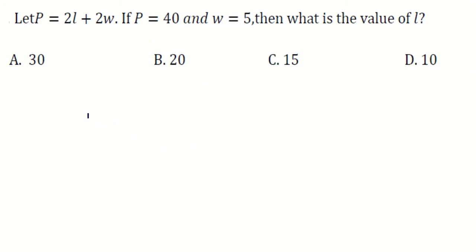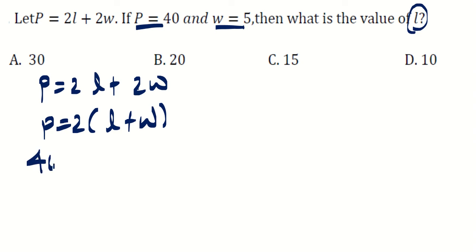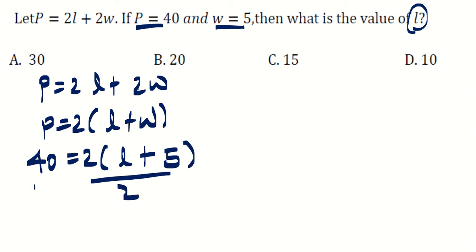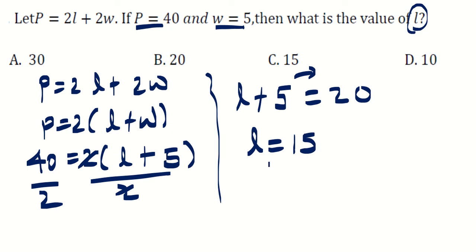The next question says P equals 2L plus 2W, the perimeter formula of a rectangle. P and W are given; we need to find L. Substituting: P equals 2 times (L plus W). Replacing P with 40 and W with 5, then dividing both sides by 2, we get L plus 5 equals 20, so L equals 20 minus 5, which is 15. The answer is C.